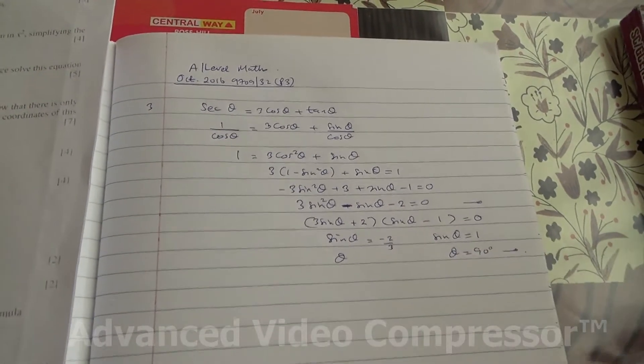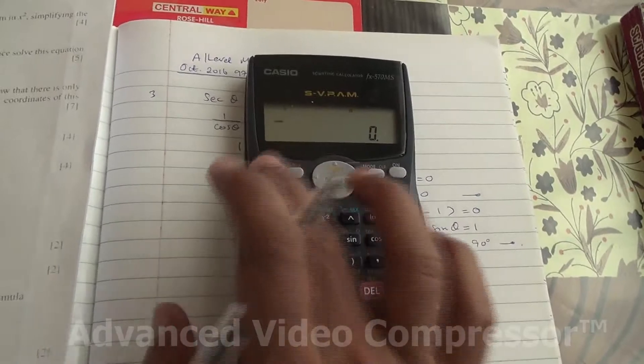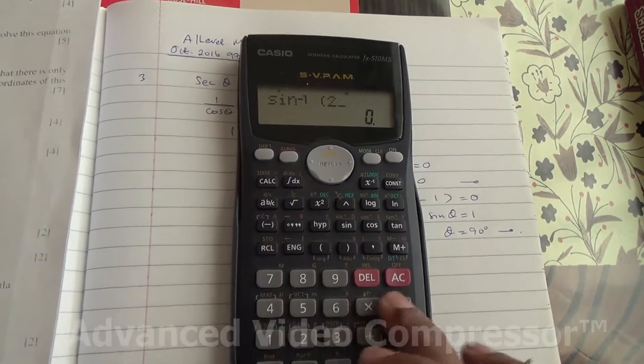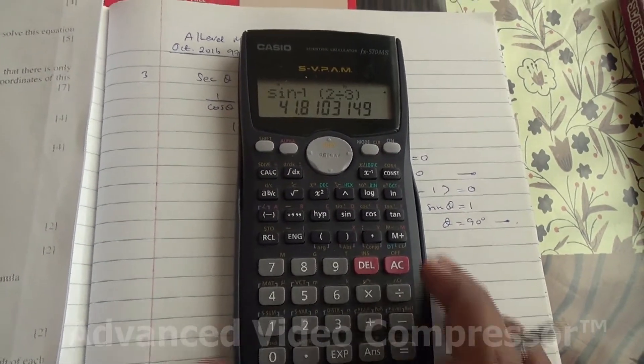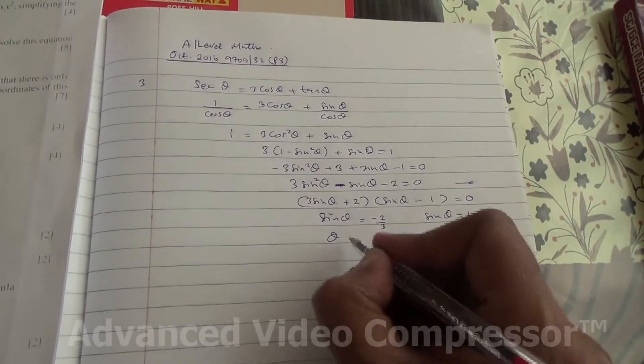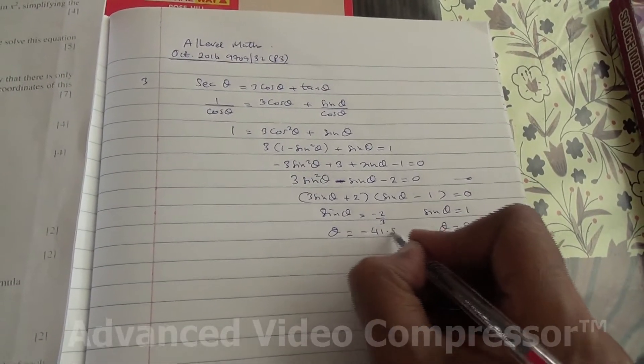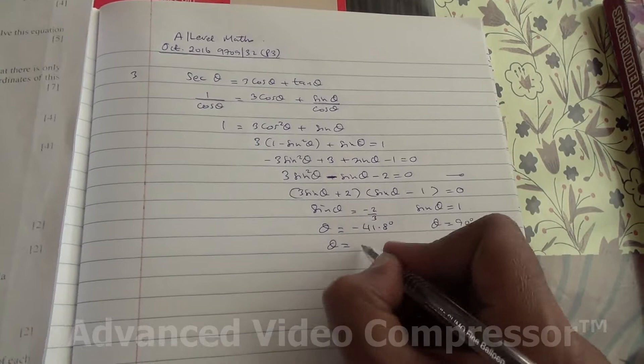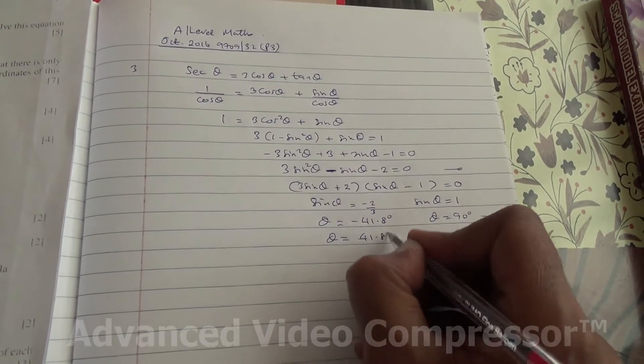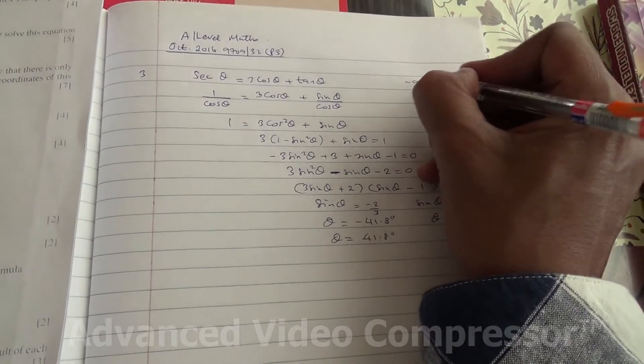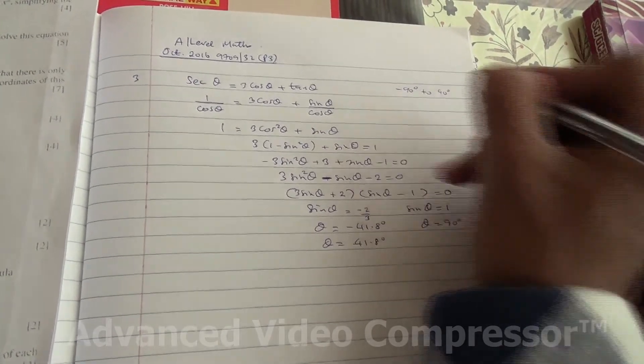And if you have to solve this one, you are going to get, let me just check it out for you, inverse sin of 2 over 3, 41.8. So we're going to say then minus 41.8 degrees, and then 41.8, because we're moving from minus 90 to 90 degrees.